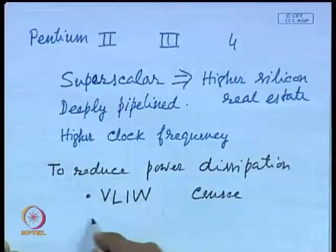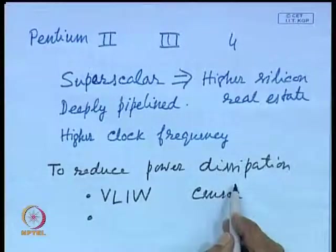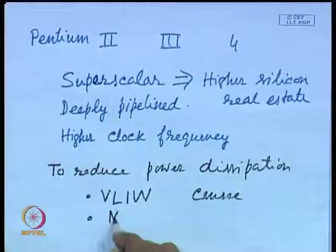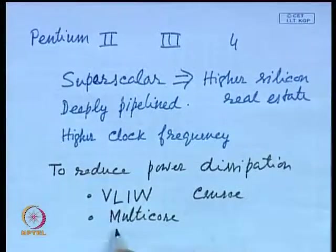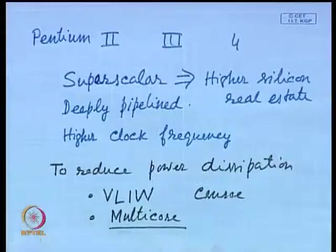Another approach to reduce power dissipation is to use multi-core. Later on we shall discuss about multi-core — instead of using a single processor within a chip and continuously increasing frequency to get higher performance, we have to move from instruction level parallelism to thread level parallelism.